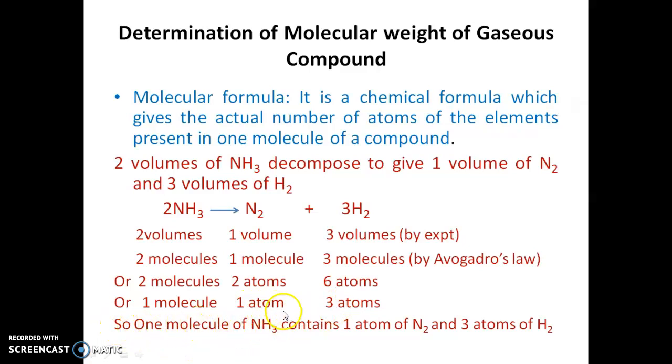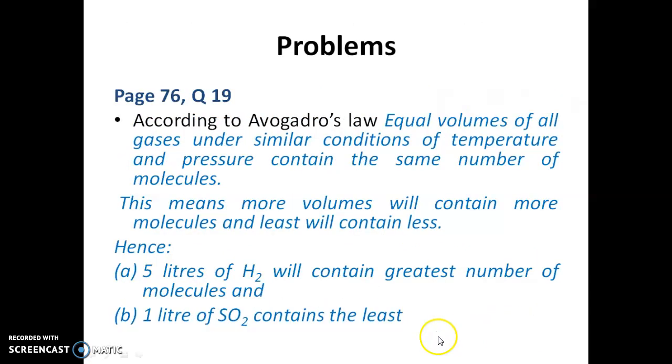So, one molecule of ammonia contains one atom of nitrogen and three atoms of hydrogen. So, you go through your page 16 of your book, question number 19.